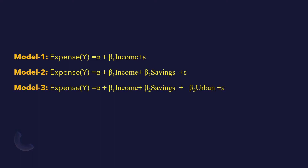For example, we'd like to investigate the functional relationship between expense and its determinants. In the first model, expense is our dependent variable and income is the first independent variable. In model 2, we add savings, and in model 3, apart from income and savings, we add another independent variable, R1. We want to see whether model 2 explains the dependent variable better than model 1, and whether model 3 explains it better than model 2.